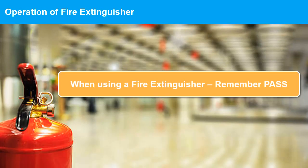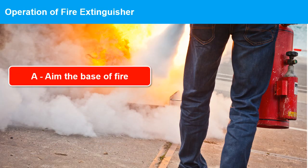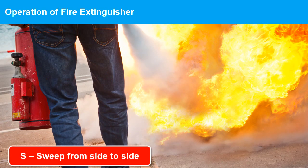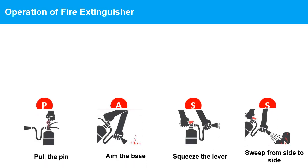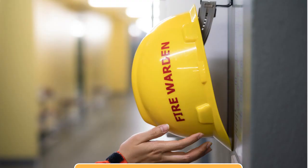When using a fire extinguisher, remember the acronym PASS: Pull the pin, Aim at the base of the fire, Squeeze the handle, and Sweep from side to side. By following these PASS steps, you can effectively use a fire extinguisher to put out a small fire and prevent it from spreading.